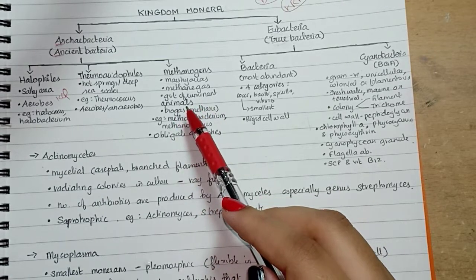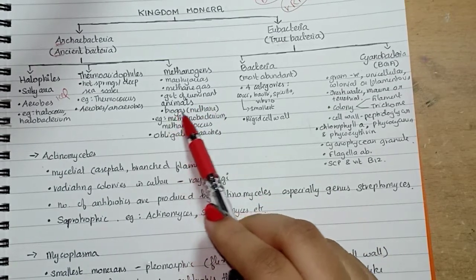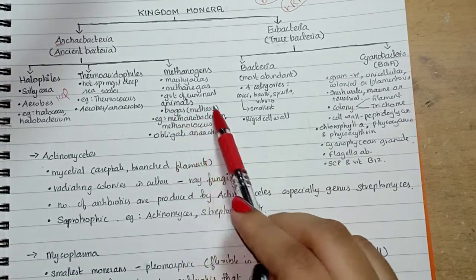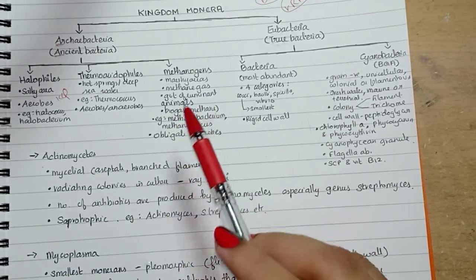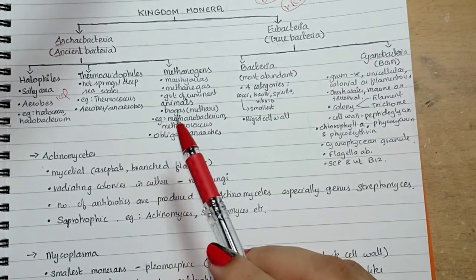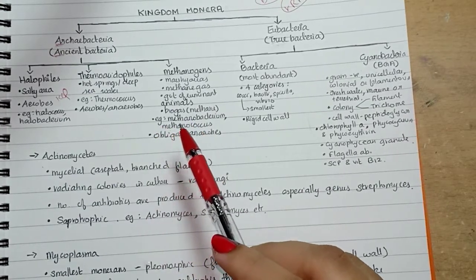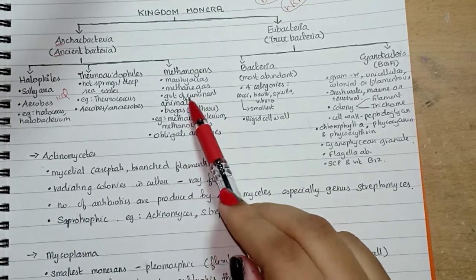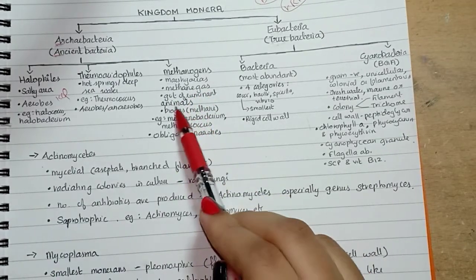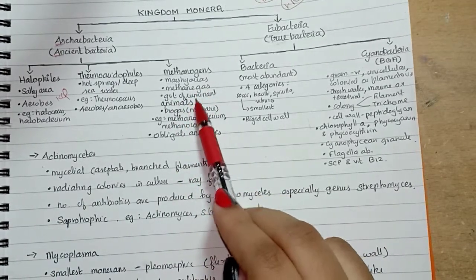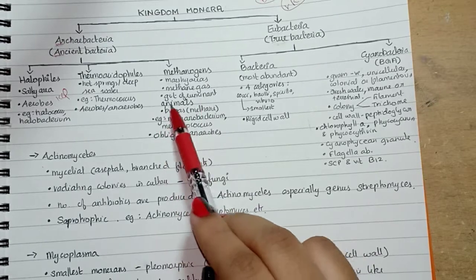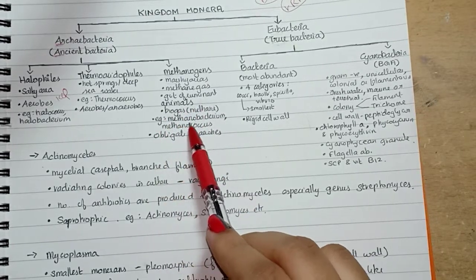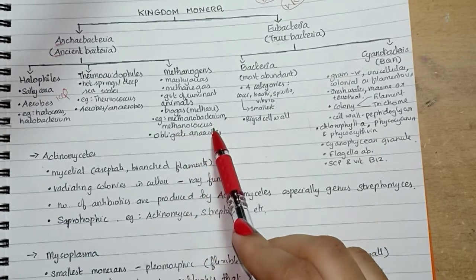They are responsible for the production of biogas, that is methane, from the dung of these ruminant animals. So they are present in the gut of ruminant animals, and their dung produces biogas. Examples are methanobacterium and methanococcus.